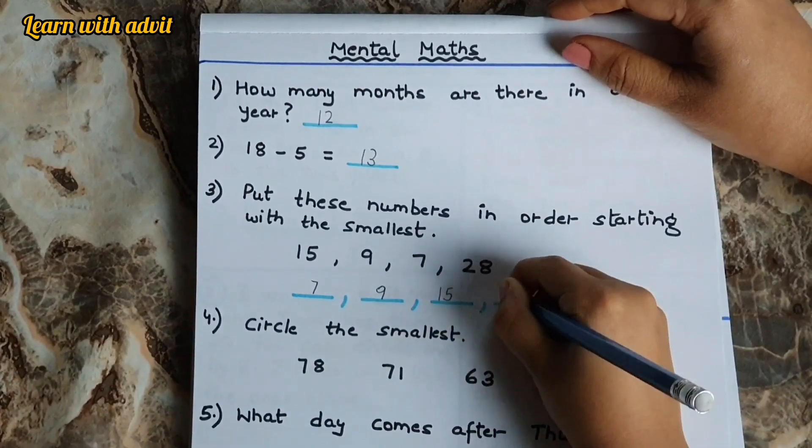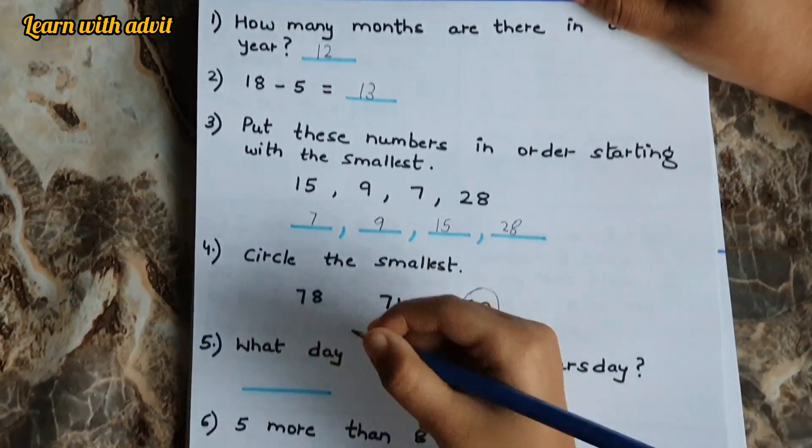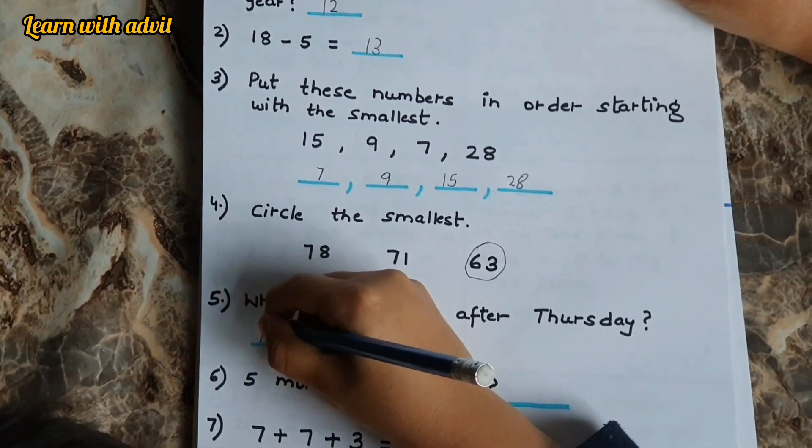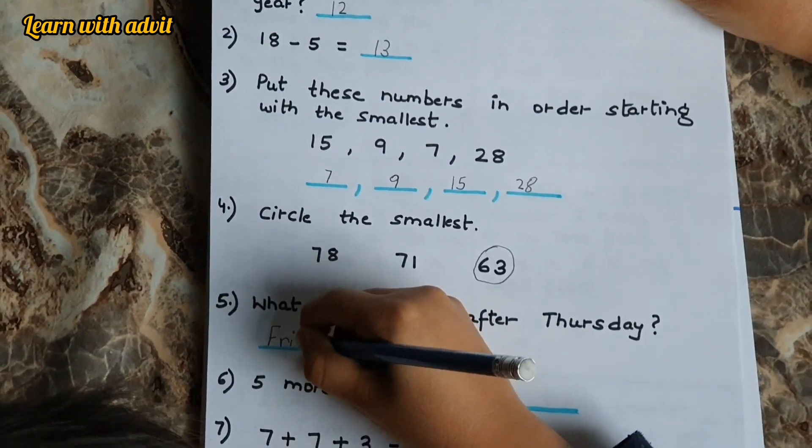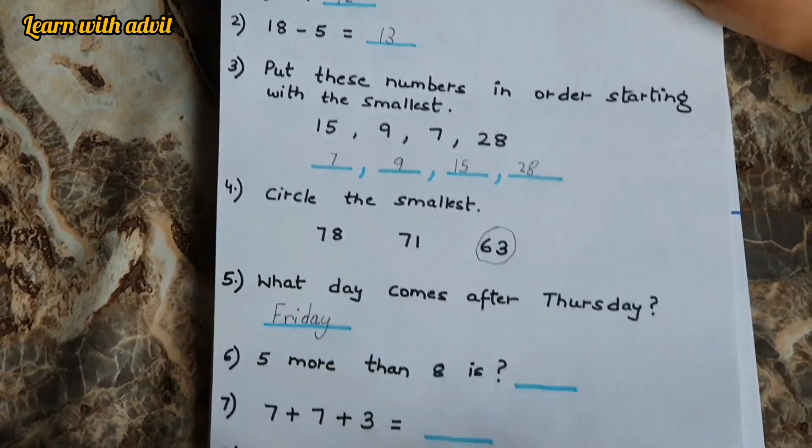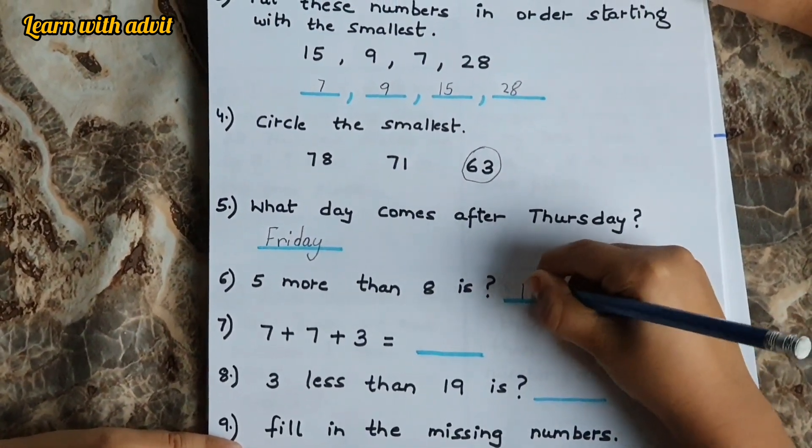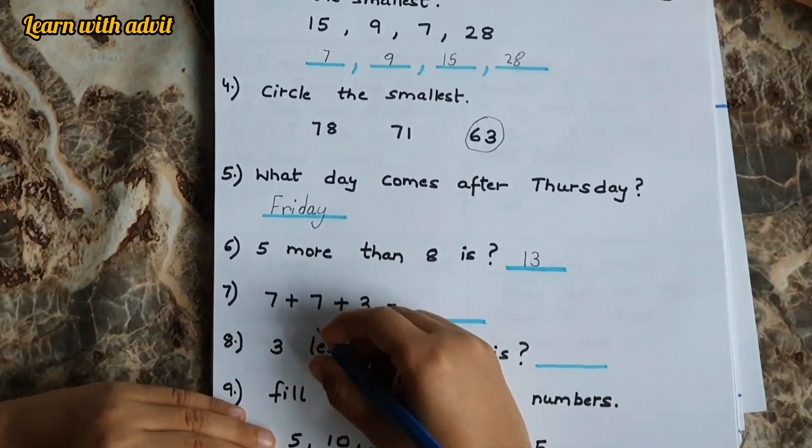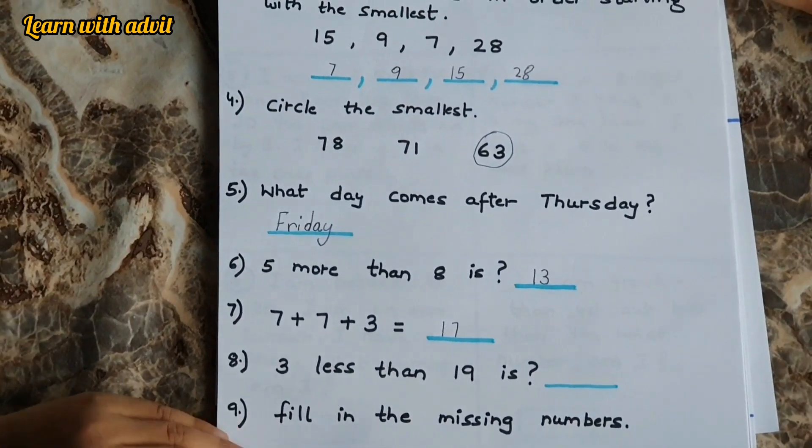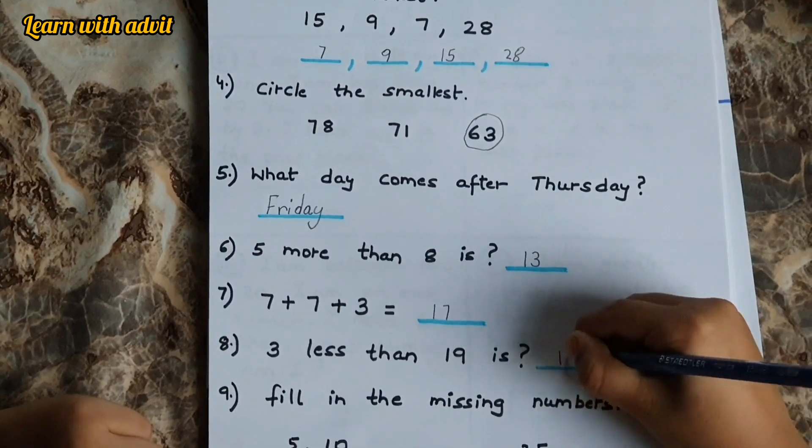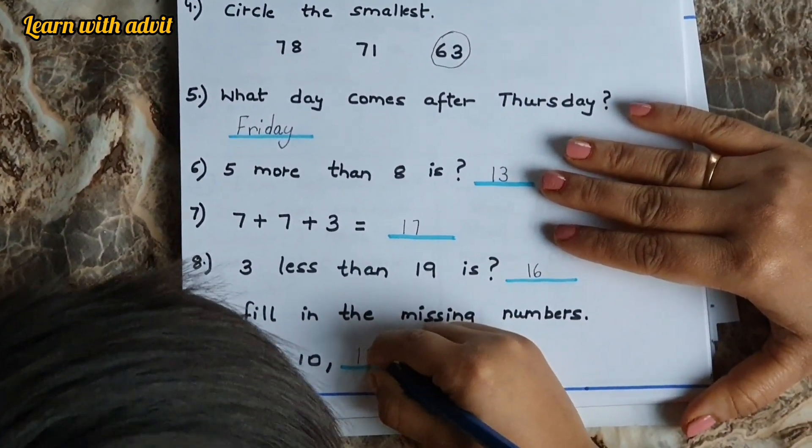Write it down smallest to the biggest: seven, nine, fifteen, twenty-eight. Circle the smallest - sixty-three. What day comes after Thursday? Friday. Five more than eight is thirteen. Seven plus seven plus three - seven plus seven is fourteen, fourteen plus three is seventeen. Very good. Fill in the blanks with the missing numbers: five, ten, fifteen, twenty, twenty-five.